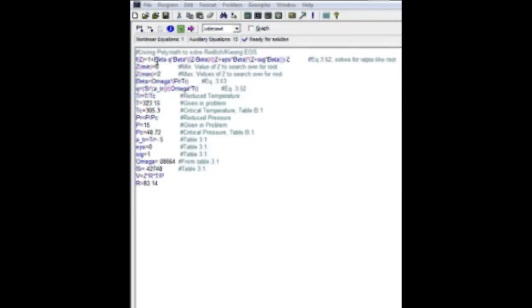So the first step is to enter the equation of state that we're going to be solving, which I've done here, except we're going to call it a function of Z. So we move the Z on the left side of the equation over the right side, and put F of Z on the left side.